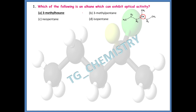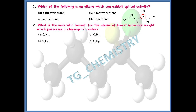The answer can differ in different questions, but the concept should be that you have to look for the chiral center within the compound. If there is a chiral center, the molecule will be optically active.